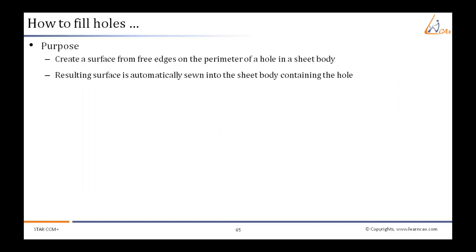If there are unwanted holes in the CAD model which are not required in the CFD model, how should we avoid those holes? There is a tool for that which automatically fills up unwanted holes in the CAD model. This tool creates a surface from an existing perimeter free edge. The new surface created is automatically merged into the sheet body, creating a complete surface.